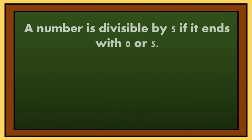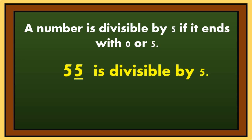Let's now talk about the divisibility rule for 5. A number is divisible by 5 if it ends with 0 or 5. In Tagalog, ang number ay nahahati sa 5 kung nagtatapos ito sa 0 o sa 5. 55 ends with 5, so it is divisible by 5. If we divide 55 by 5, it is equal to 11.